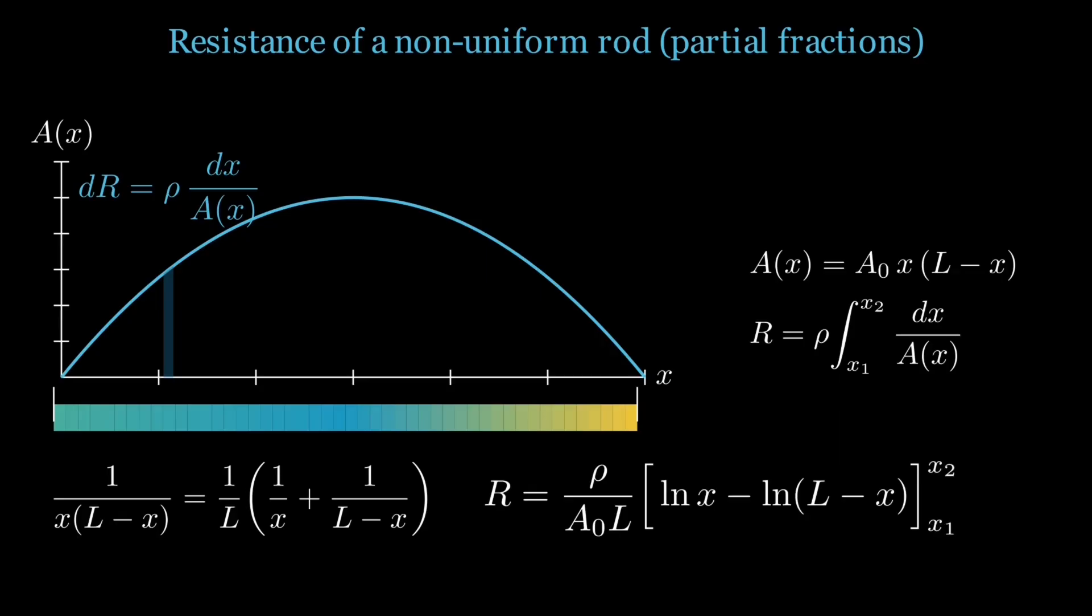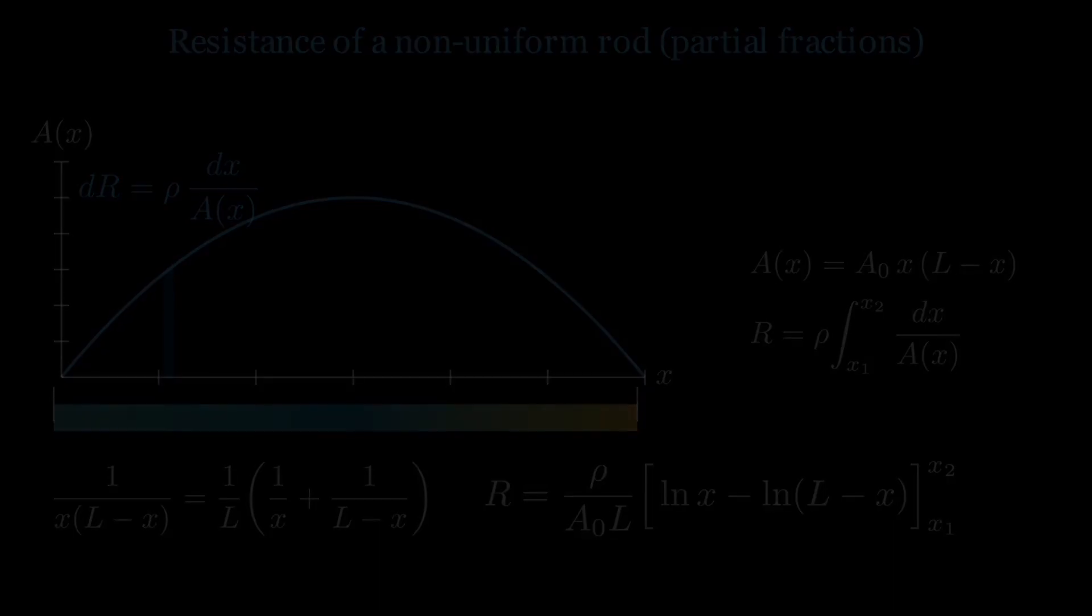And that's the essence of partial fractions: turning a complicated ratio into simpler pieces whose contributions are easy to sum. The result is just a logarithmic expression at the endpoints, showing how the varying width controls the total resistance. Physically, you are just stacking thin resistive slices in series, with the slow change in area affecting the total through a neat log ratio.